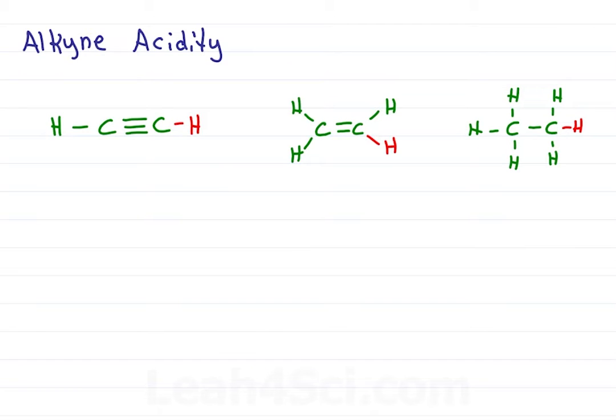The alkyne is more acidic than an alkene, which is more acidic than an alkane. This has to do with the increased S-character of the sp-carbon atom in the alkyne.